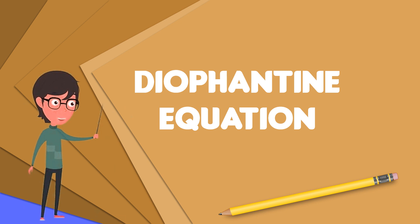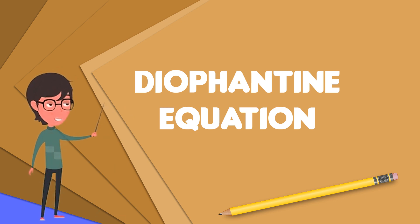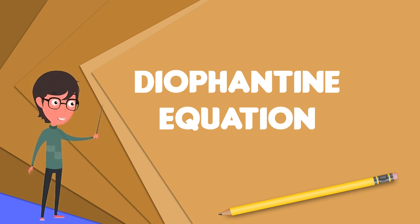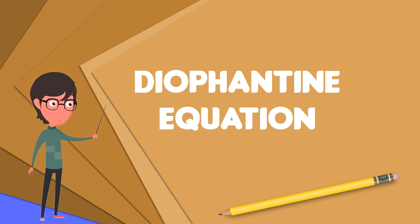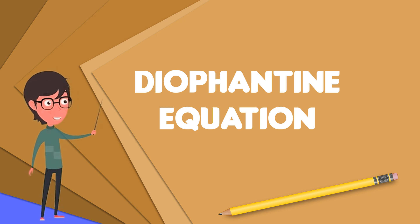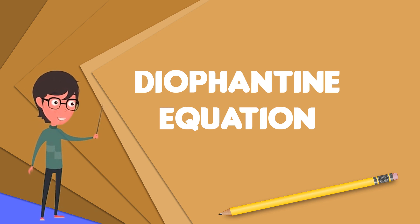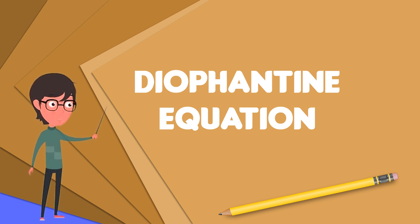Diophantine problems have fewer equations than unknown variables and involve finding integers that work correctly for all equations. In more technical language, they define an algebraic curve, algebraic surface, or more general object, and ask about the lattice points on it.